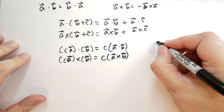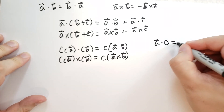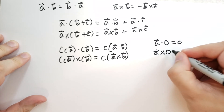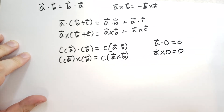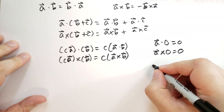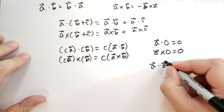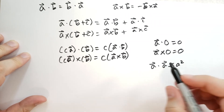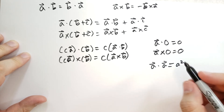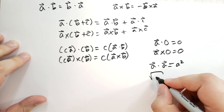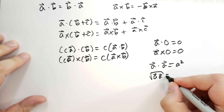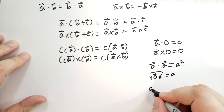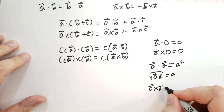If you take the dot or cross product of the zero vector, you get zero. If you take the dot or cross product with itself, you get a curious result: the dot product with itself is the magnitude squared — we use this to determine the length of A, where the square root of A dot A equals A. A vector crossed with itself is always zero, because parallel vectors give zero when you take the cross product.